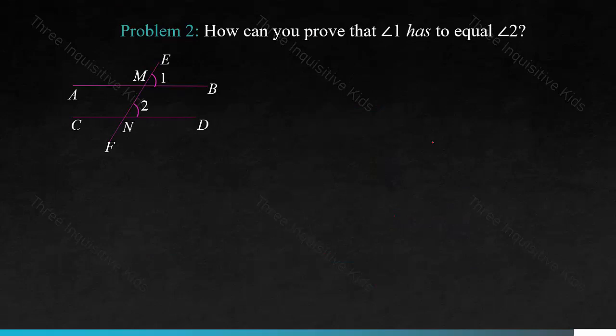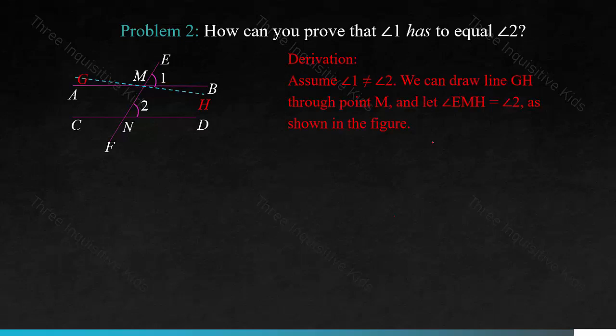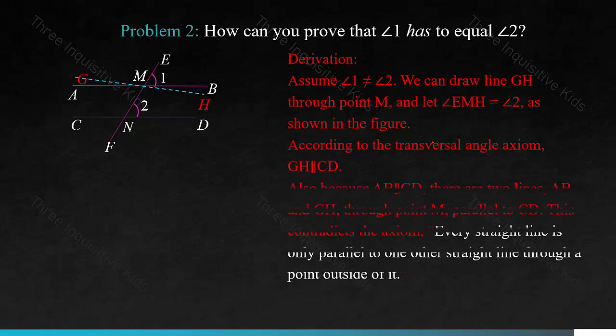How can you prove that angle 1 has to equal angle 2? What if angle 1 wasn't equal to angle 2? Here's our derivation process. We first assume that angle 1 does not equal angle 2. We can draw line GH through point M and let angle EMH equal angle 2, as shown in the figure. According to the transversal angle axiom, GH is parallel to CD. Also, because we already know that AB is parallel to CD, there are two lines, AB and GH, through point M, parallel to CD.